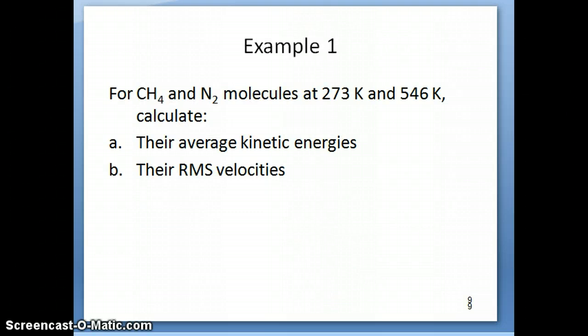So the rest of this video, I just want to use to work through this particular example of just using those formulas that we talked about earlier to solve a couple of problems here. The problem is fairly straightforward. It's just asking you, if you have these two gases, CH4 and N2, one in one case at 273, the other case at 546, which is double that, calculate in each case average kinetic energy and RMS velocity.